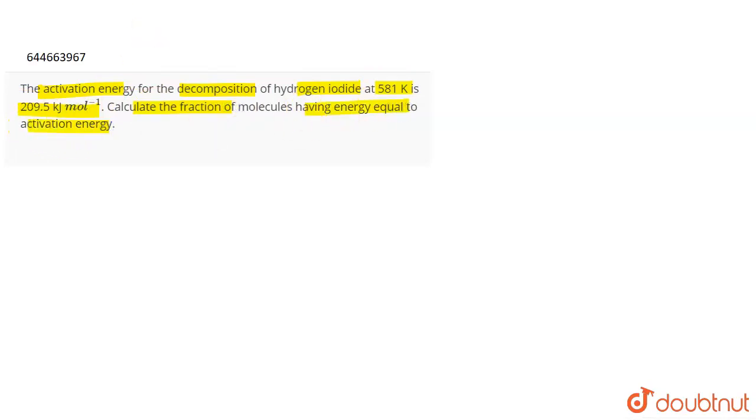According to the Arrhenius equation, we have k equals A e to the power minus Ea by RT, where k is the rate constant, A is the pre-exponential factor. A is the pre-exponential factor, or we also call it as a frequency factor.